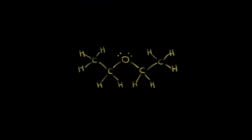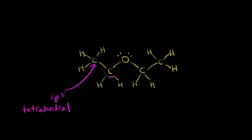This molecule is diethyl ether. Let's start with this carbon right here. The fast way: there are only single bonds around that carbon, so it must be sp3 hybridized with tetrahedral geometry. This carbon over here is the exact same situation — only single bonds around it — so it's also sp3 hybridized with tetrahedral geometry.